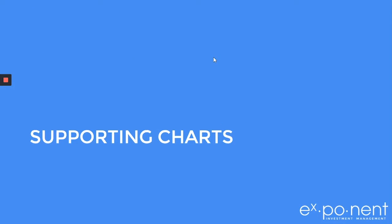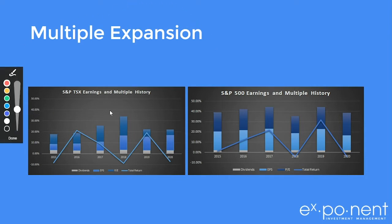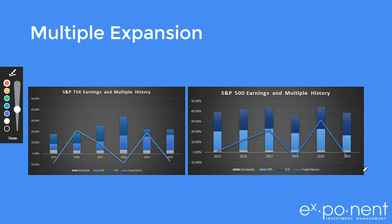Let's get started and talk about the supporting charts for our previous video. One of the concepts we always look at — we usually look at it once a year — is multiple expansion, which is really what investors are willing to pay for a dollar of earnings on the index. We have total return here — negative for the TSX and slightly negative in U.S. dollar terms for the S&P 500.